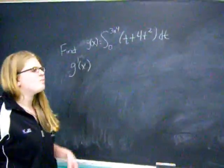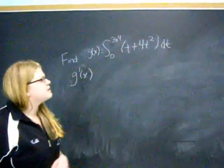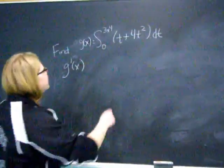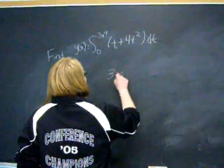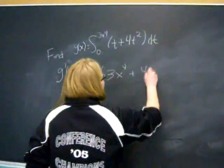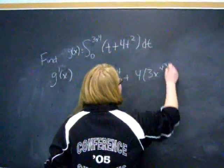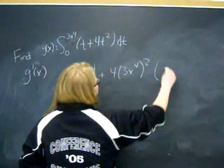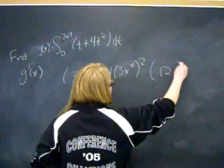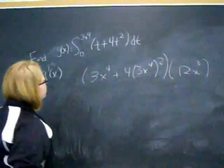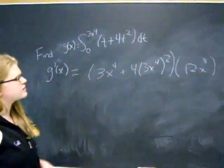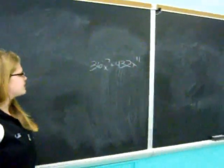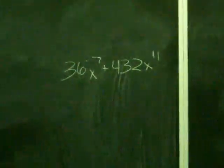Okay, so this is an example where the upper limit is a function of x, and not just x, and you have to use the chain rule for this equation. So it's going to be sine of 3x to the fourth, so sine of 3x to the fourth squared times the derivative of this, which is 12x cubed. And then the final product is, as you apply it, 36x to the seventh plus 432x to the eleventh.